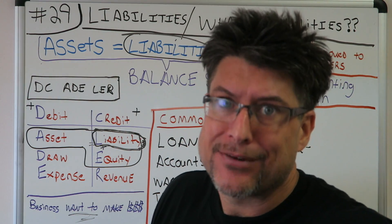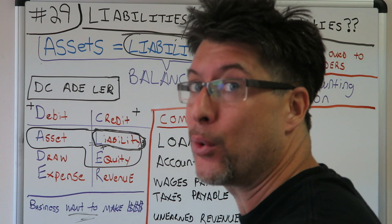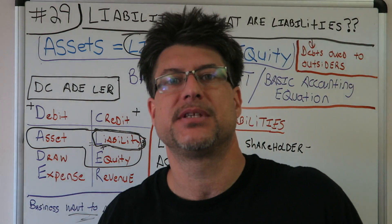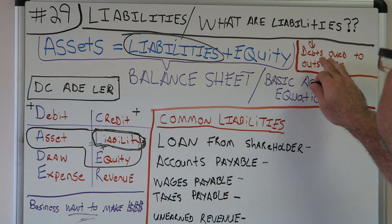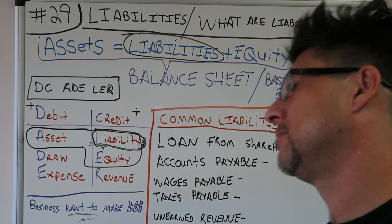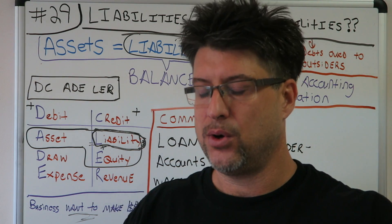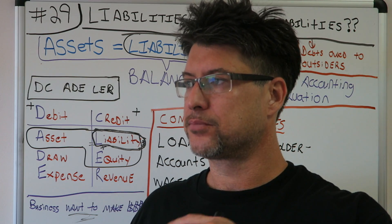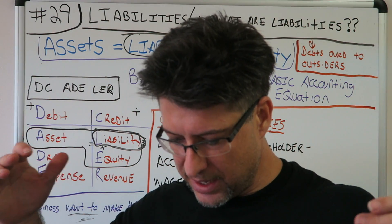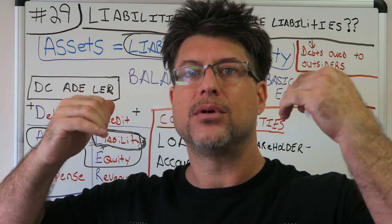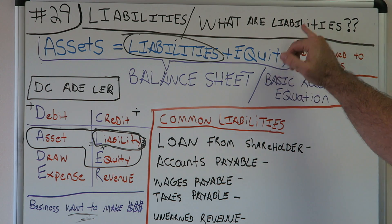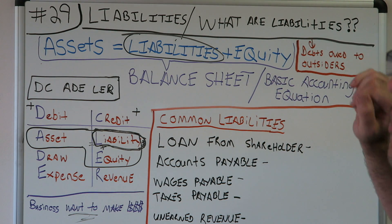Let's go to the definition in the book. The definition of liabilities in the accounting book is: debts owed to outsiders. Liabilities are debts owed to outsiders. In my head I think — I am liable for this, it's on me, I'm liable. So just think: liabilities are debts owed to outsiders.